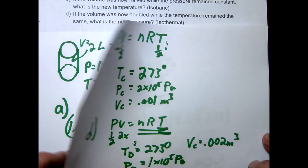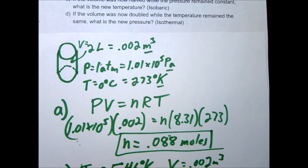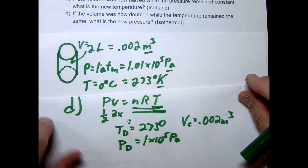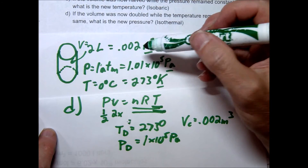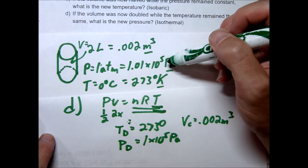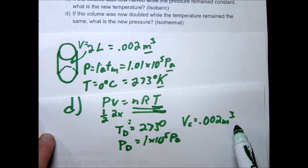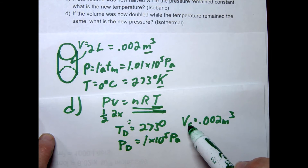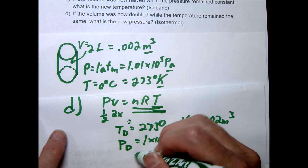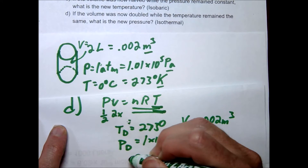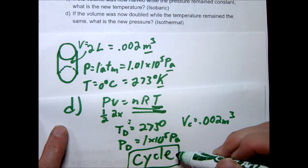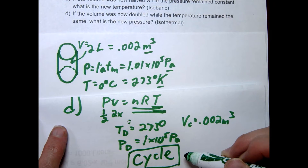Let's compare where we started and where we ended. At the beginning we had volume 0.002, pressure 1 times 10 to the 5th, and temperature 273. At the end we have the same values: 273 kelvins, 1 times 10 to the 5th pascals, and 0.002 meters cubed. We ended exactly where we started — this has a name: it's called a cycle.